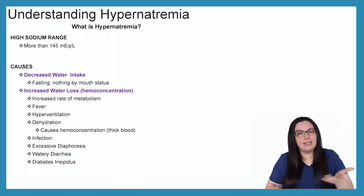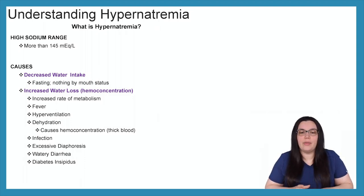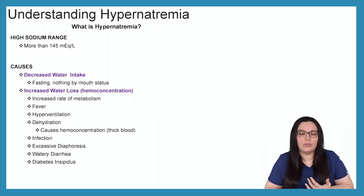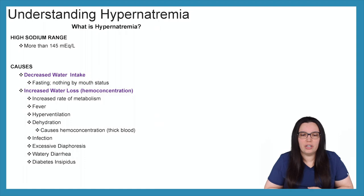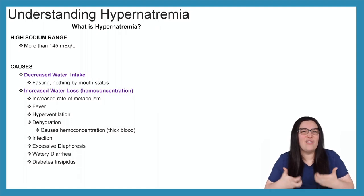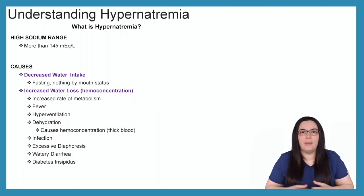Our last few categories of causes include a decrease in water intake — specifically patients who are fasting on NPO status, where we can cause hypernatremia if left on that status for too long. And lastly, increased water loss causing hemoconcentration of serum levels inside the blood vessels. An increased rate of metabolism, fevers, hyperventilation, dehydration, infection, and excessive diaphoresis can all cause this. If you're excessively sweating and not replacing that fluid with water, you can develop hypernatremia.